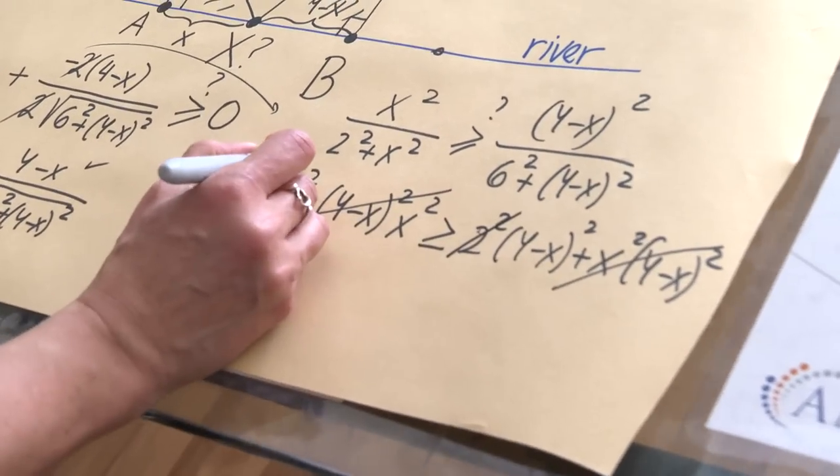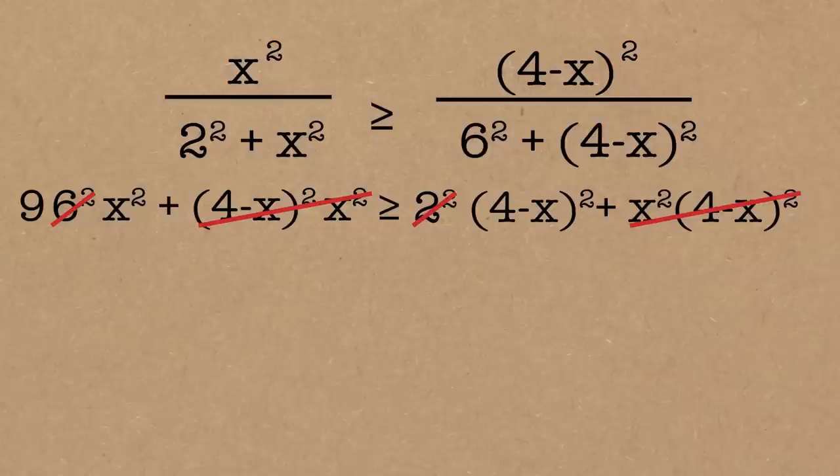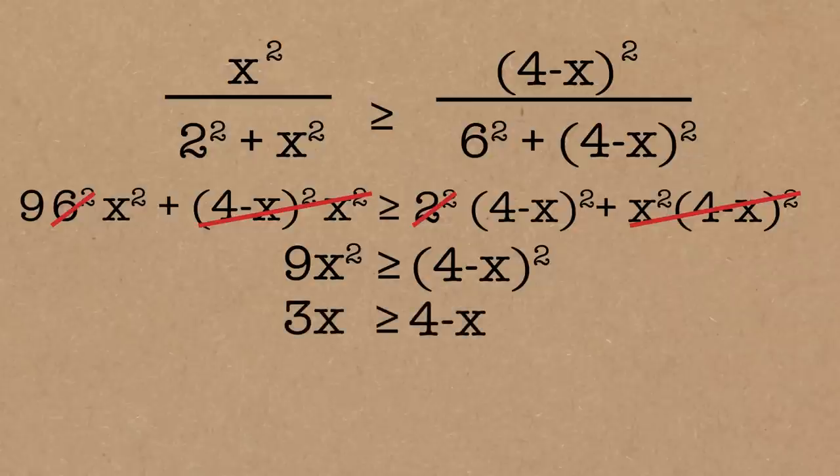This 4 and this 36 would give you a 9. So the only survivors here are 9x squared and 4 minus x squared. And again, no need to multiply through because I can just take square root on both sides. And all of those little terms are still positive. So what this turns out to be is 3x on the left, 4 minus x on the right. What is this happening? Move the x to the other side, 4x greater than or equal to 4, x greater than or equal to 1.